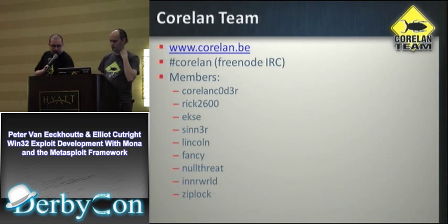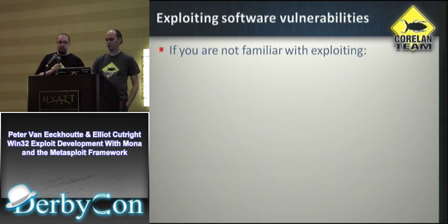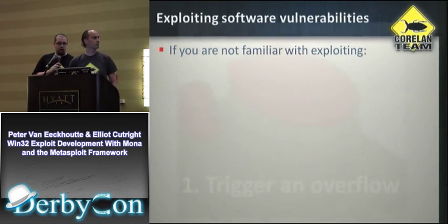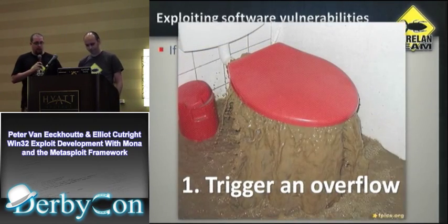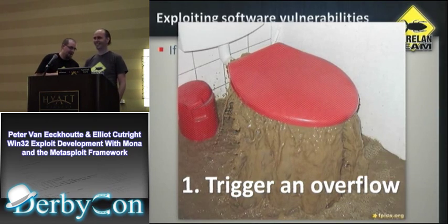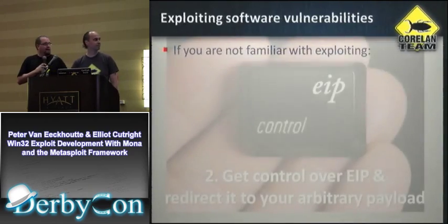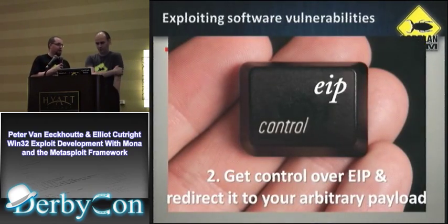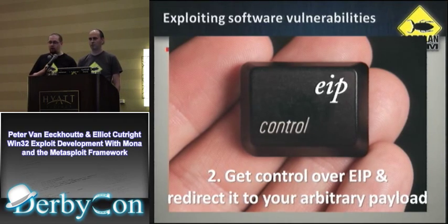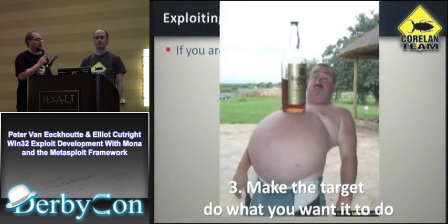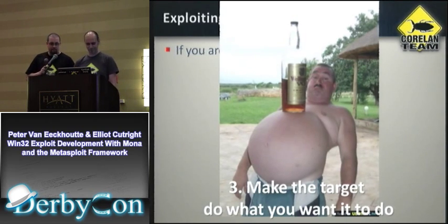For those who didn't want to raise their hand, if you're not familiar with exploitation, there are three general steps we're going to talk about here. The first being triggering the overflow — we need to make the app crash in some way. Step two is we need to control the IP and redirect it to payload. And three is making the target do what we want — something special.